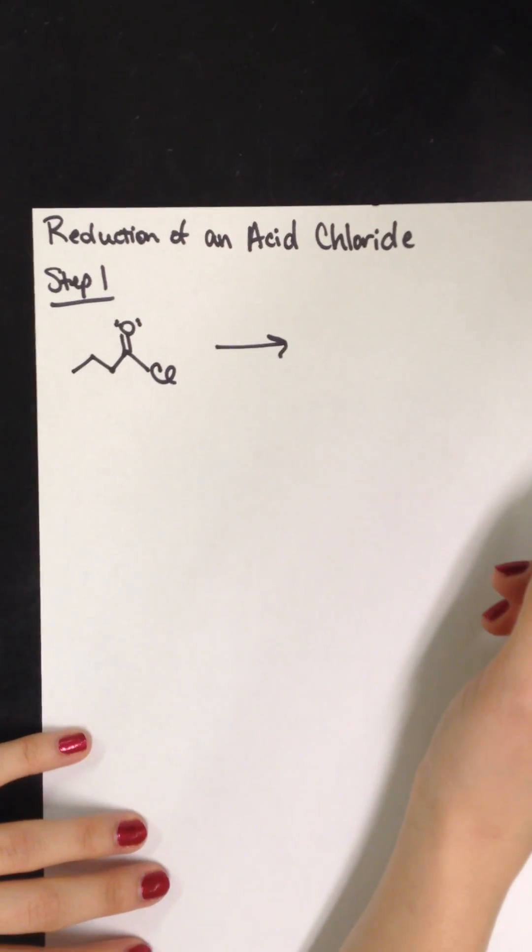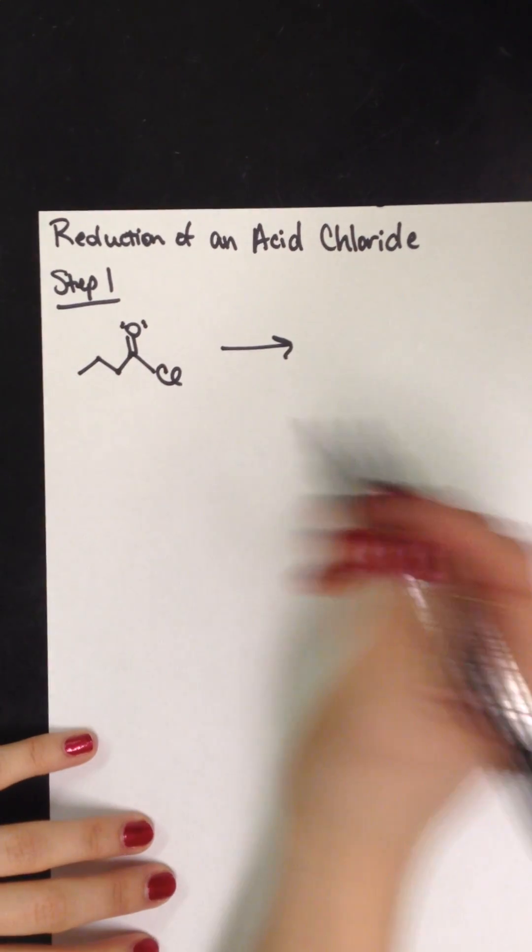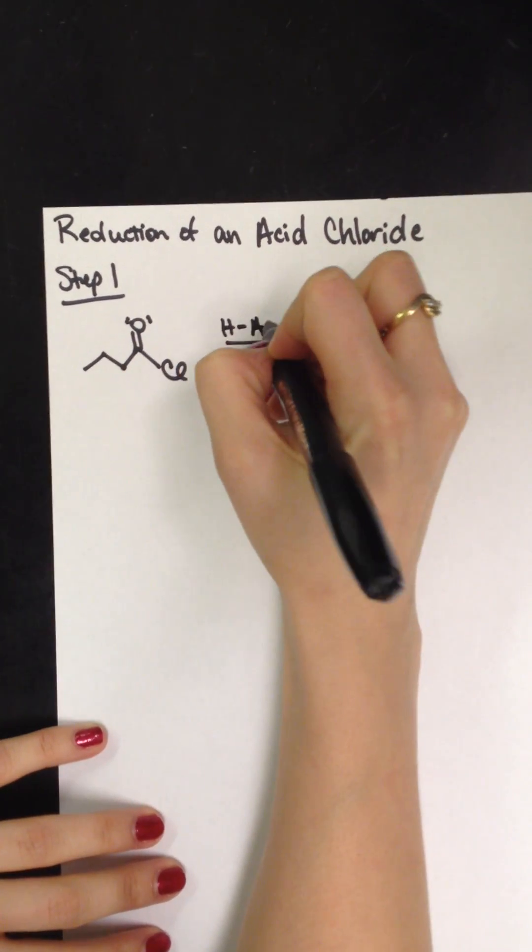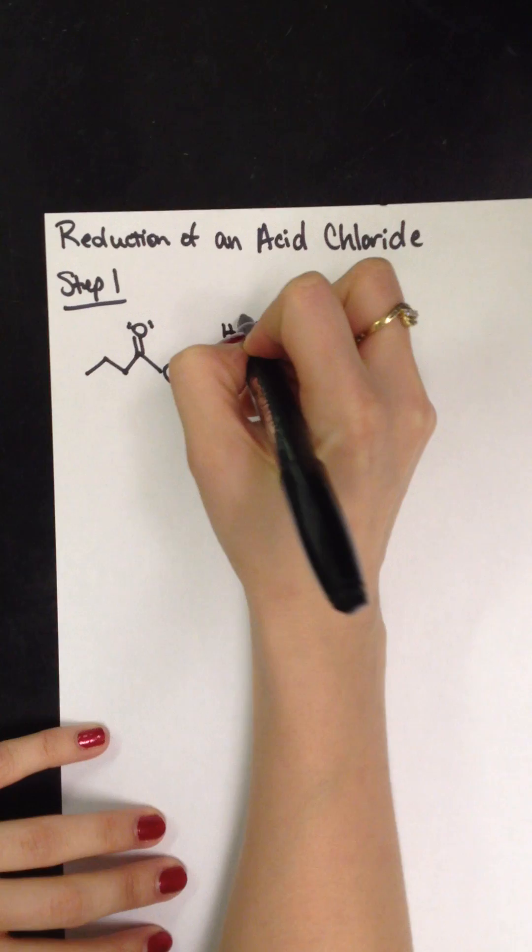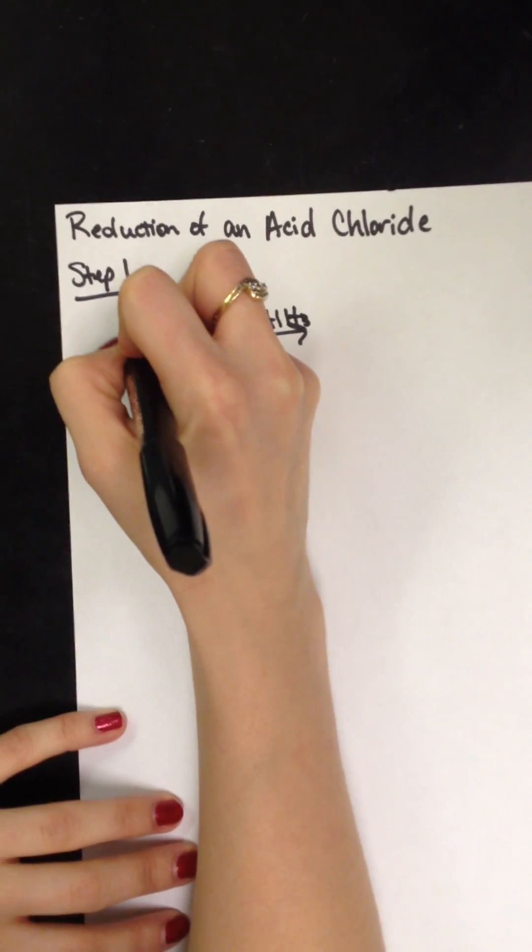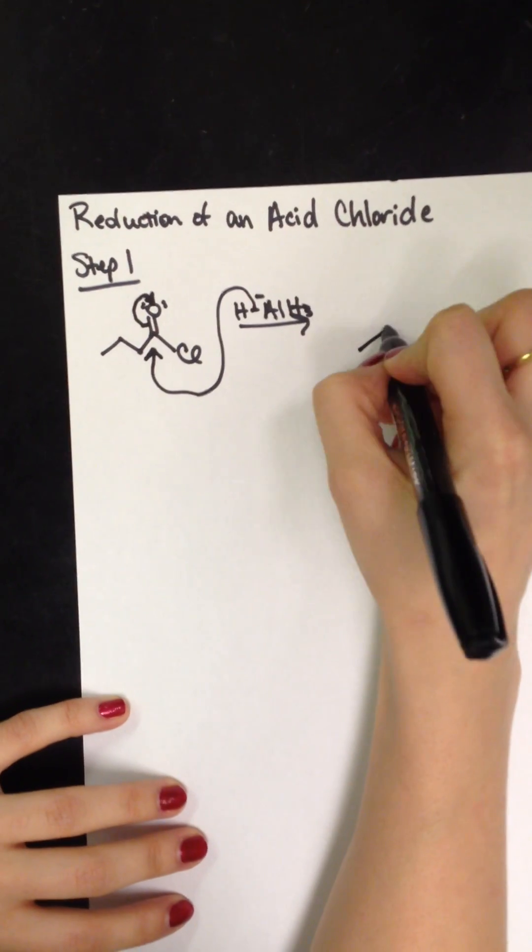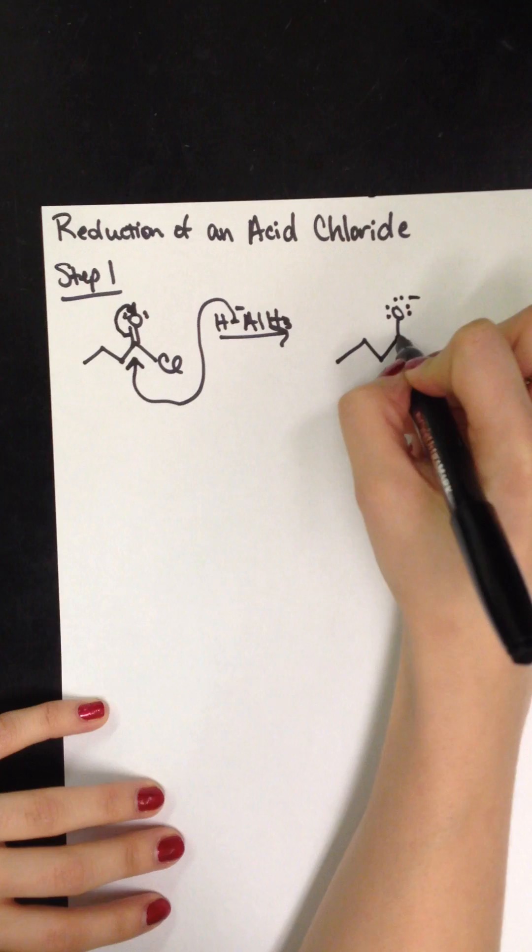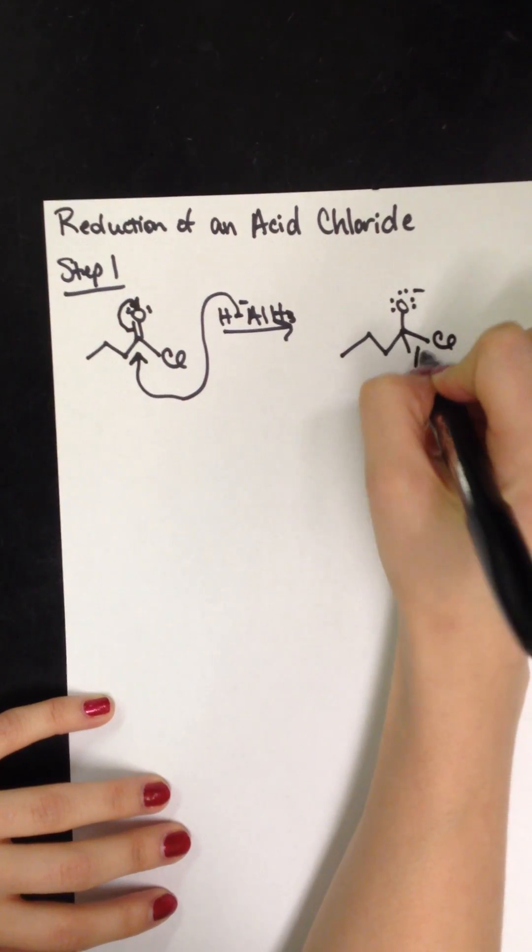My mechanism is the reduction of an acid chloride. In step one, we have our original reagent, and to that we're going to add aluminum hydride. This has a strong negative which is going to attack the delta positive and break the pi bond to form a negative on the oxygen and add a hydrogen.